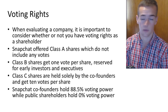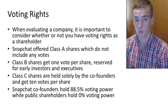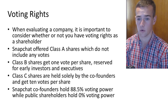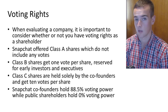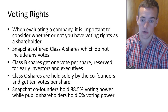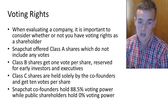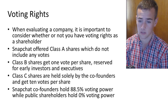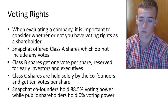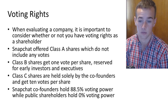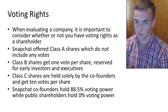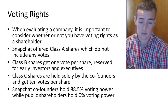If you're a Snapchat shareholder and you own Class A shares, which are the ones traded on the secondary market, you have no say in those company decisions. The Class B shares get one vote per share and were reserved for early investors as well as executives. The Class C shares are held solely by the co-founders and they get 10 votes per share. The Snapchat co-founders hold 88.5% of the voting power, while the public shareholders hold absolutely 0% voting power.